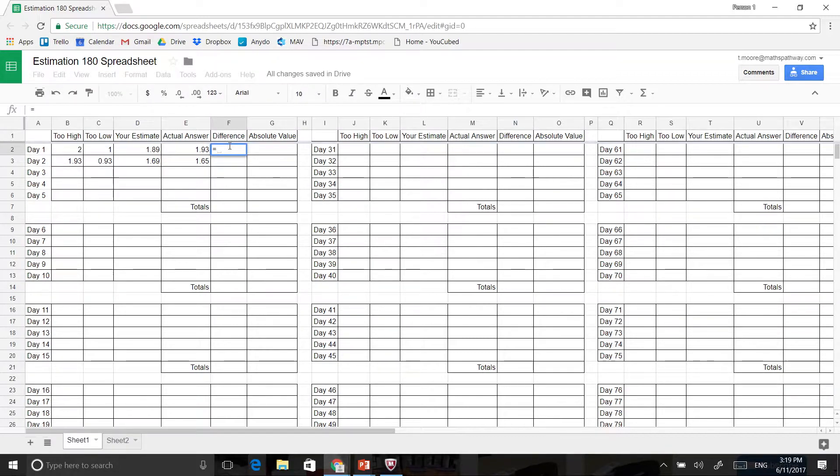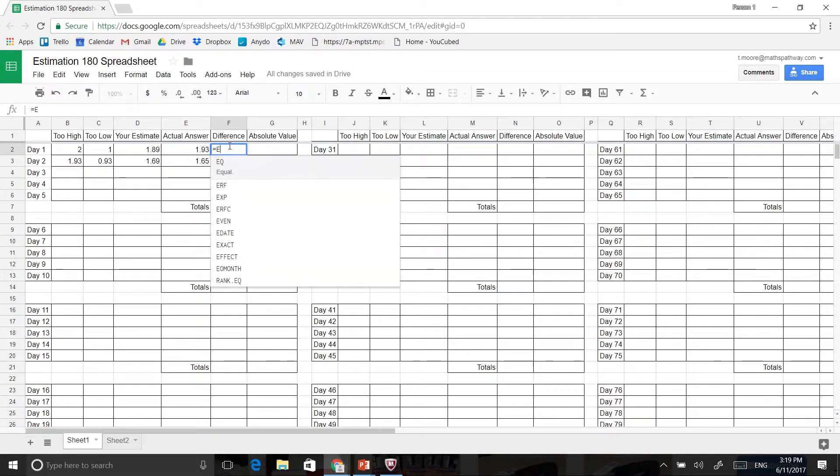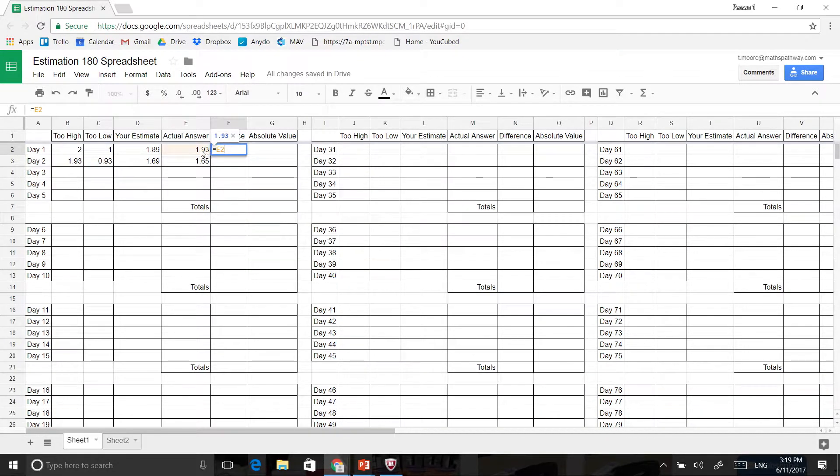And then I'm going to go E2 because I want to go the actual answer minus the estimate that I had. So E2 minus, now my estimate was in the cell D2. So I'm just going to go minus D2 like that and press enter.